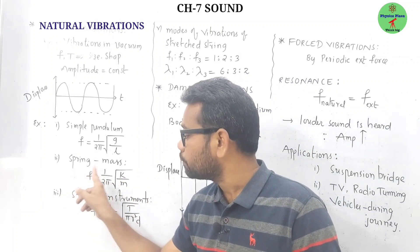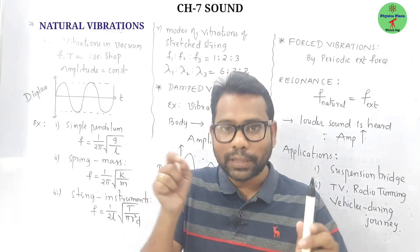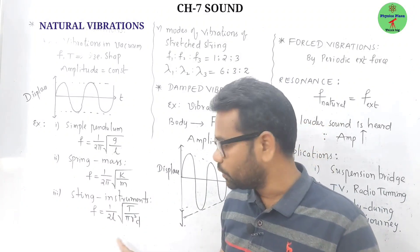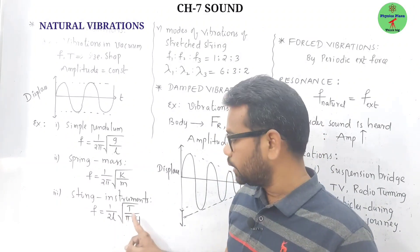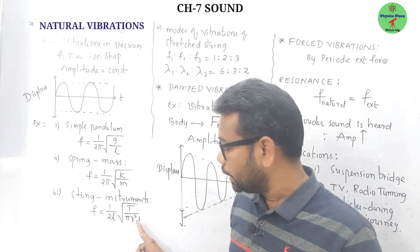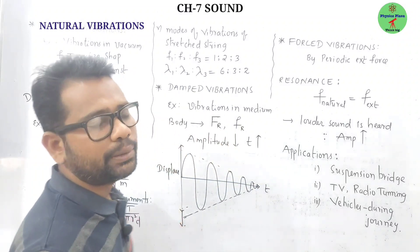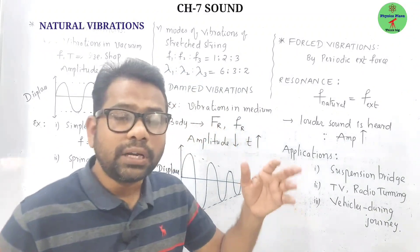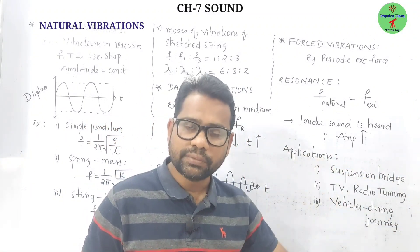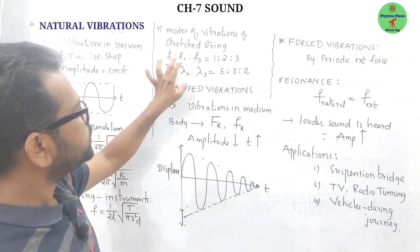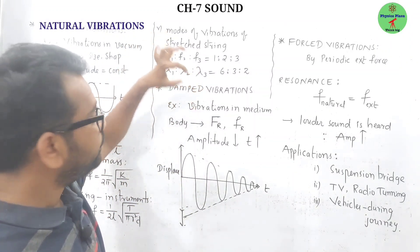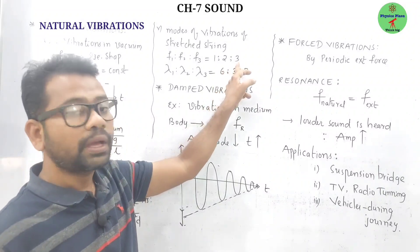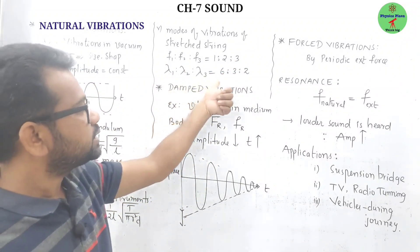For a string instrument, frequency = 1/(2l) × √(T/(π r² d)), which depends on length l, tension T, radius r, and density d of the string. If a string stretched between two rigid supports is plucked at different points, it has different modes of vibration. The ratio of frequencies f₁:f₂:f₃ = 1:2:3, and the ratio of wavelengths = 6:3:2.